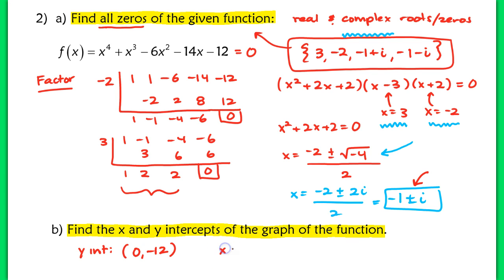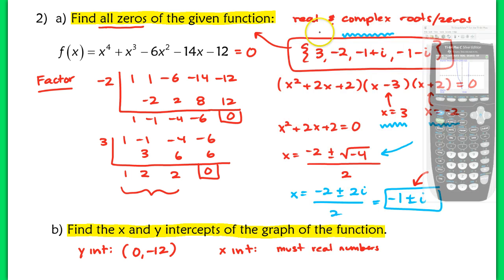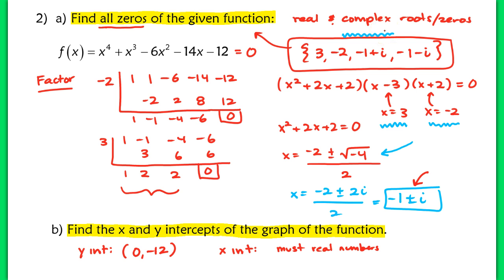The x-intercepts are related to the zeros of the function, but for x-intercepts, these have to be real numbers. Going back to our graph, we can see we only cross the x-axis at x equals positive 3 and x equals negative 2 — we're not seeing the complex roots on the graph. So x-intercepts will always be real numbers. We have two x-intercepts: one at (3, 0) and one at (negative 2, 0). We do not include complex roots when discussing x and y intercepts.